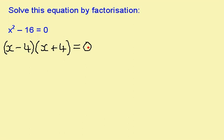I now need to solve this equation because I've got two things multiplied together, giving me 0. If this bracket is 0, then x must be 4.